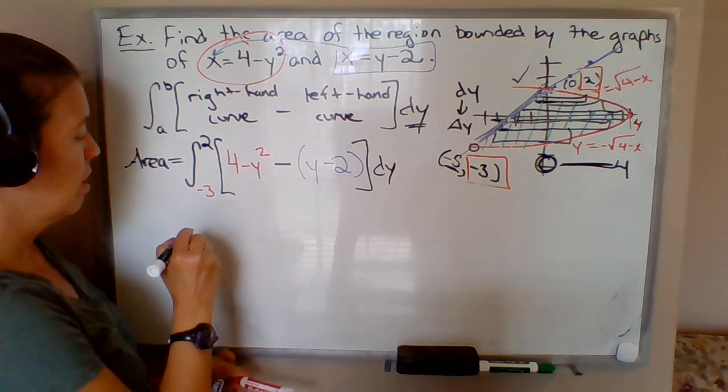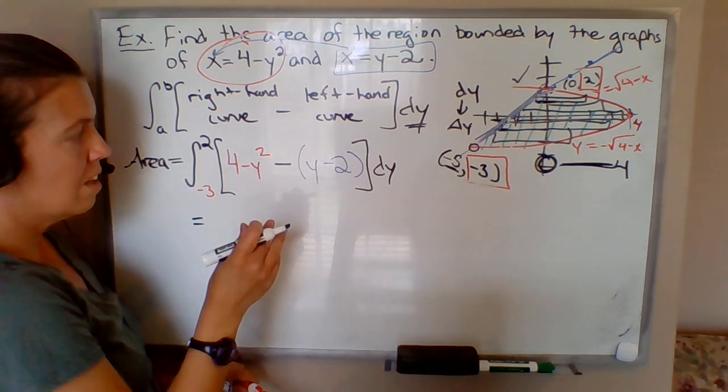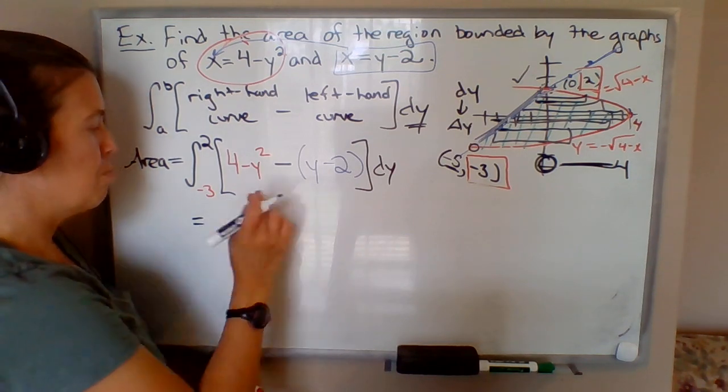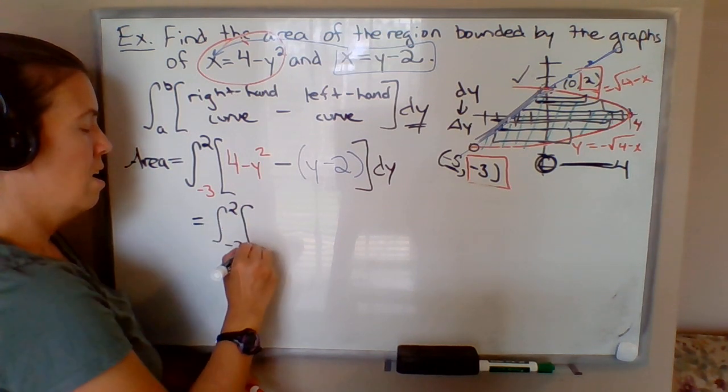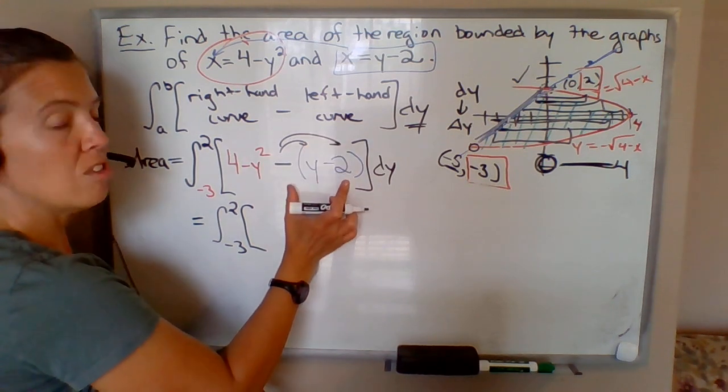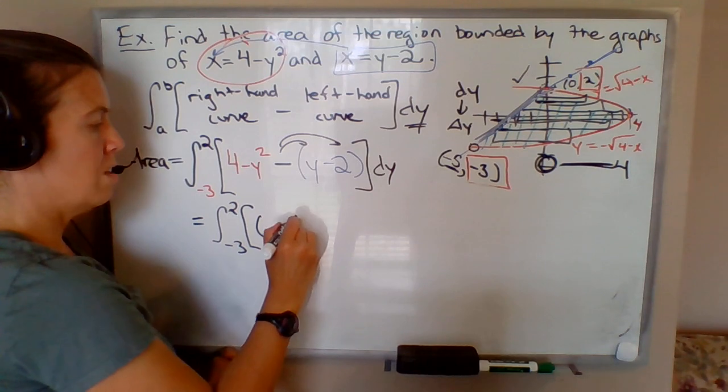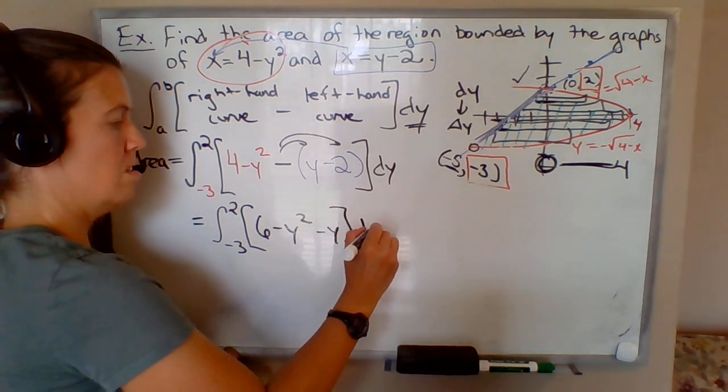So now I'm going to crank out the actual area. First, combine like terms inside the brackets here. This is the integral from -3 to 2 of 4—if I distribute the negative here, this will become plus 2—so that'll be 6 - y² - y, dy.